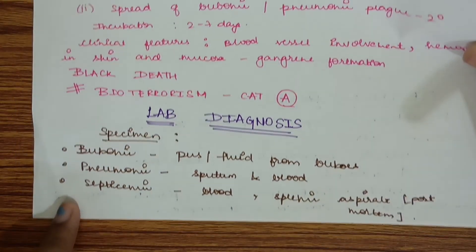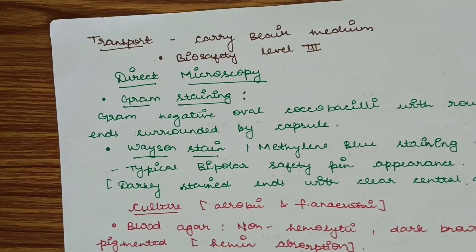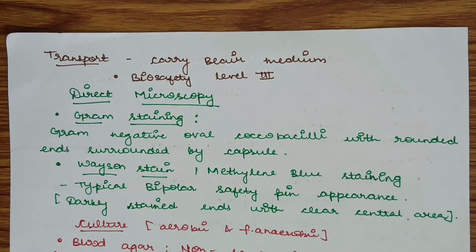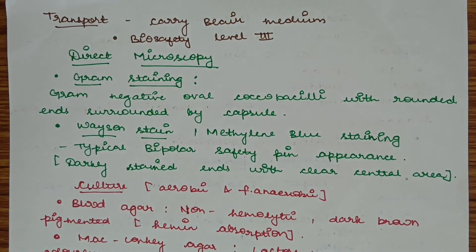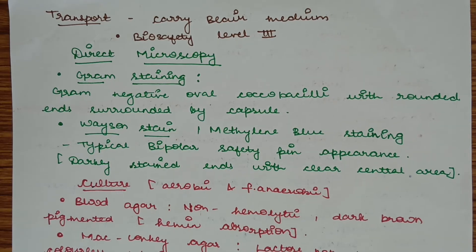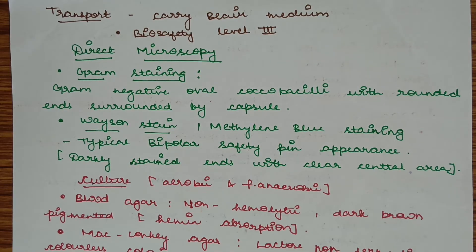Lab diagnosis. The specimen collection: in bubonic plague, pus or fluid from the buboes can be collected; in pneumonic plague, sputum or blood can be collected; in septicemic plague, blood or splenic aspirate in post-mortem cases can be collected. Transportation is generally by Cary-Blair medium if delay is expected and should be transported according to biosafety level 3 as it is hazardous. Direct microscopy by gram staining shows gram-negative oval coccobacilli with rounded ends surrounded by a capsule.